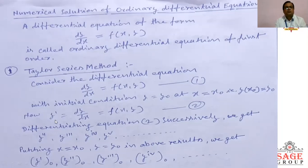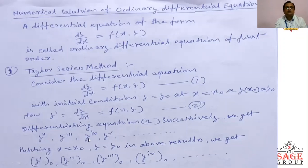Now y-prime is given as dy/dx, which is f(x, y). Then differentiating equation 2 successively with respect to x, we get y double dash, y triple dash, the fourth derivative of y, and the fifth derivative of y, and so on.